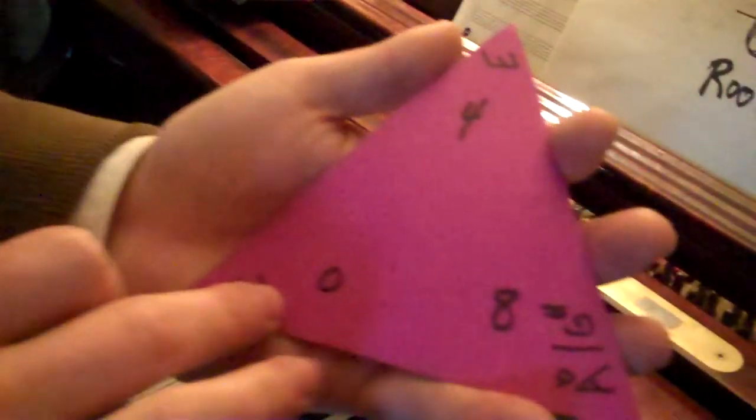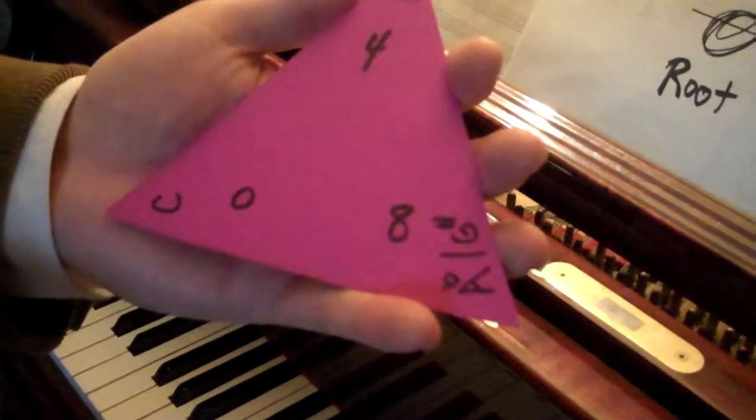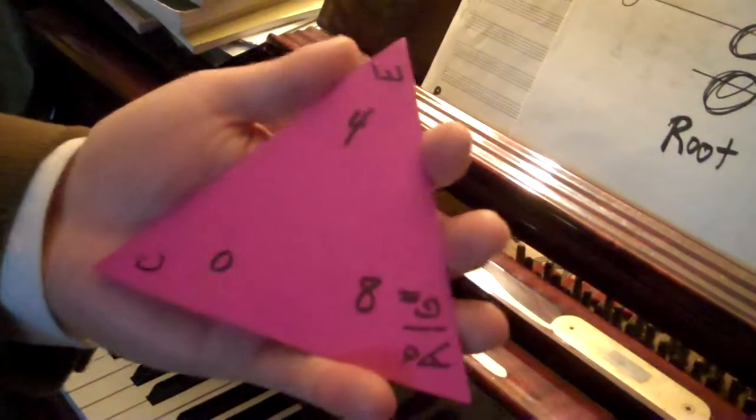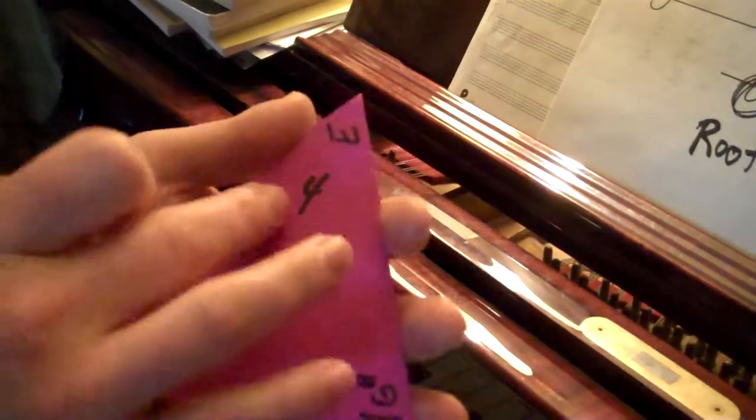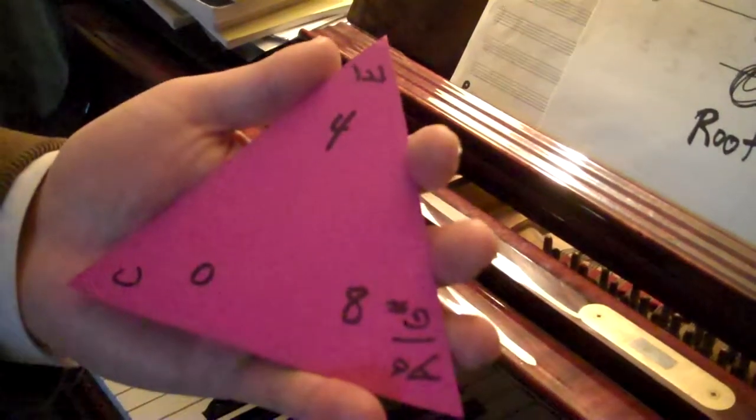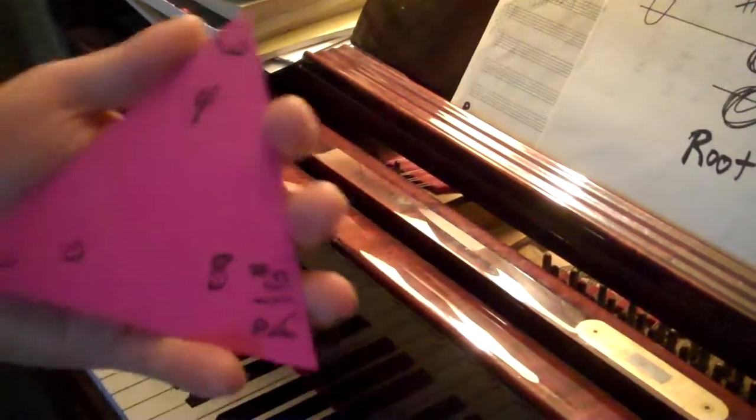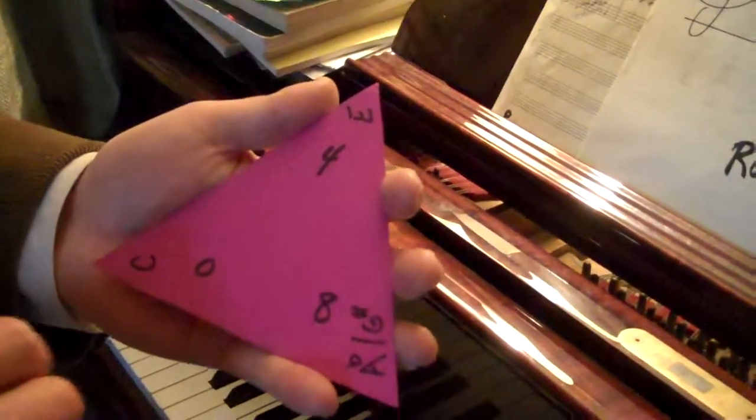So looking at our augmented chord here, we see that of course the identity element is found there. Also the other axiom, the inverse axiom, we find that 4 and 8 added together mod 12 give us our identity element, which is the definition of the inverse axiom.